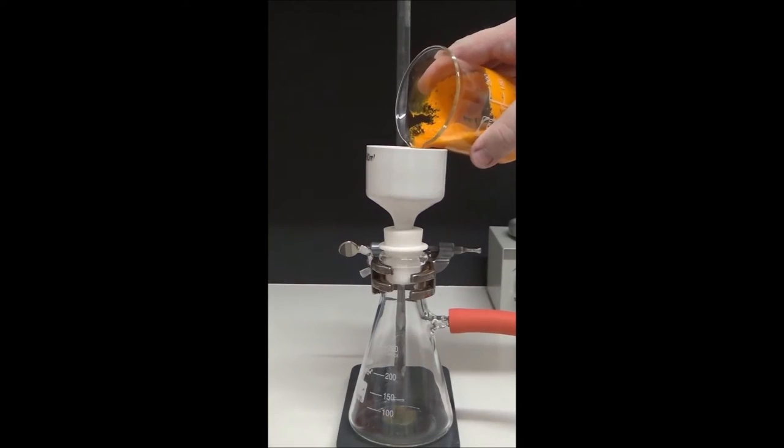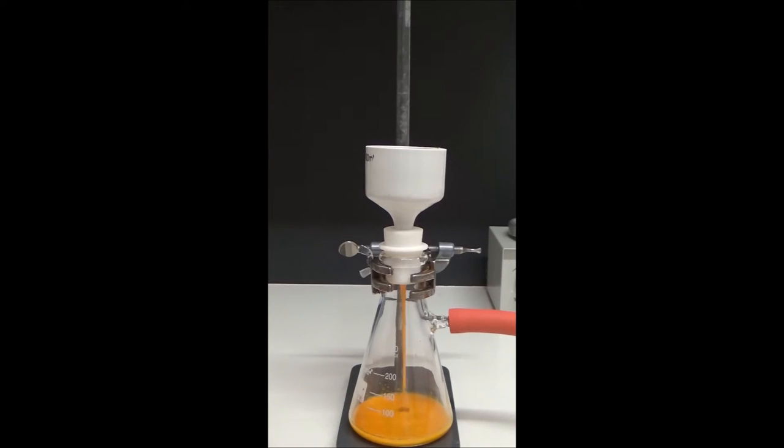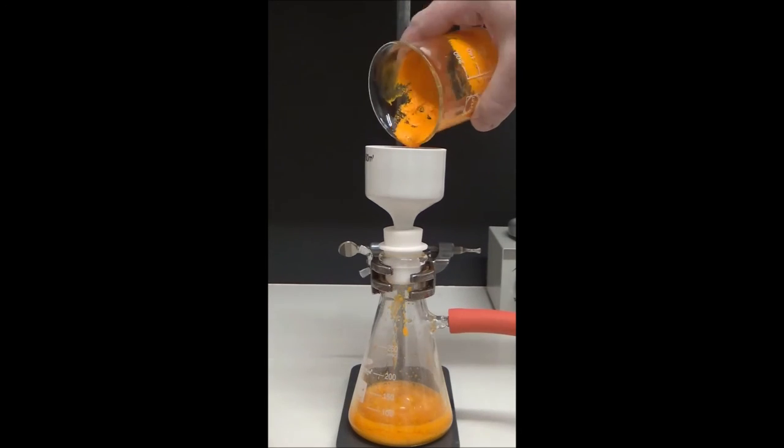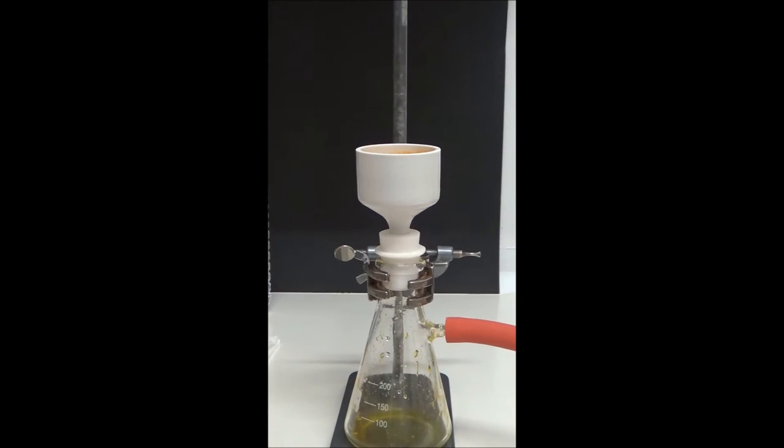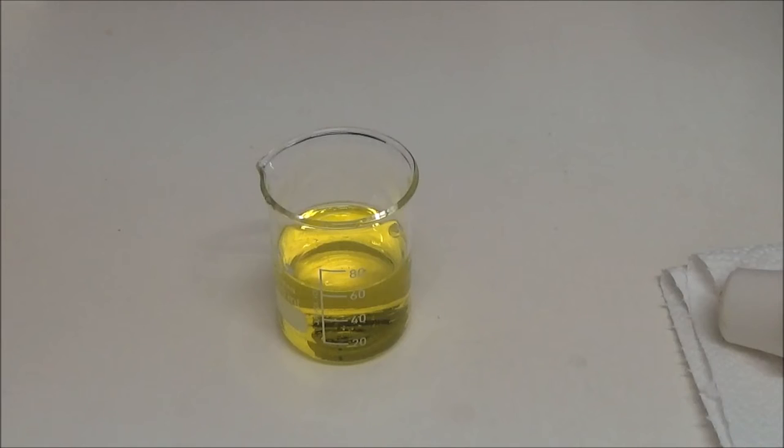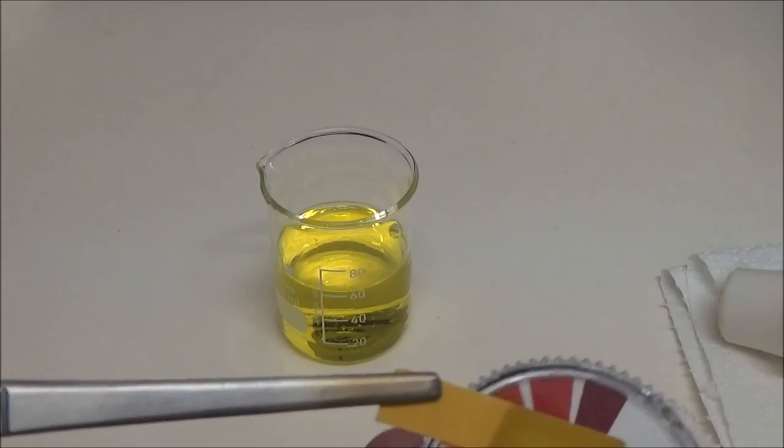The precipitate was then removed by vacuum filtration. Since initially quite a lot of solids went through the qualitative filter paper, the filtration process was repeated twice more until only a clear liquid went through. The residue was then rinsed three more times with distilled water until the pH of the flow was only neutral to slightly acidic.